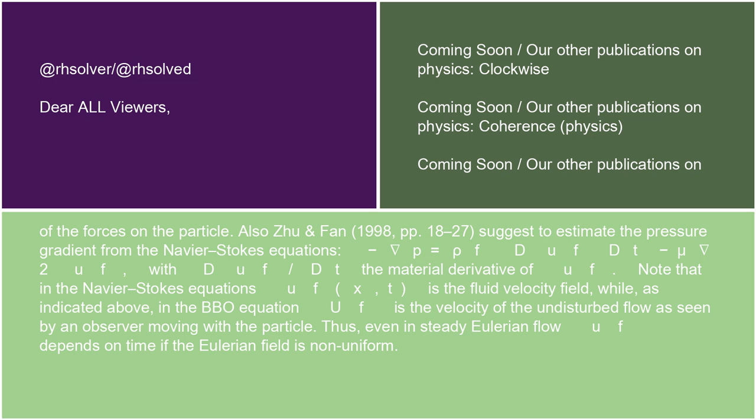Note that in the Navier-Stokes equations uf(x,t) is the fluid velocity field, while, as indicated above, in the BBO equation uf is the velocity of the undisturbed flow as seen by an observer moving with the particle. Thus, even in steady Eulerian flow, uf depends on time if the Eulerian field is non-uniform.